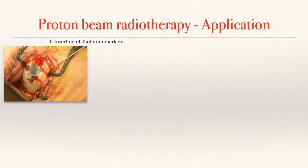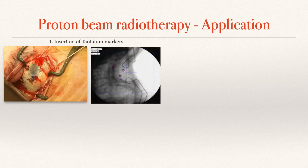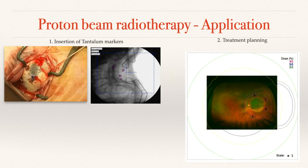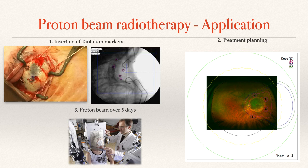The first stage of proton beam treatment is the insertion of small round clips called tantalum markers under general anaesthetic. This enables the proton beam technicians to locate the tumour on their X-rays and radiation equipment. What comes next is simulation — they make a 3D model of the eye and tumour, and create an individualised collimator to produce a beam that targets just the tumour while minimising collateral damage. Subsequently, there are four to five days of proton beam treatment over a single week.